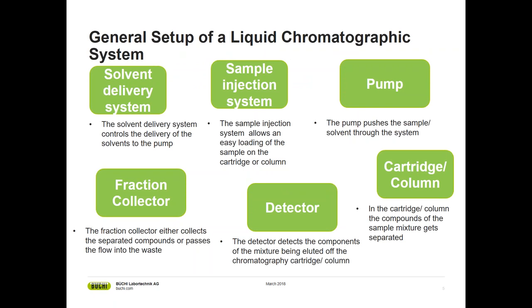What is the general setup of a liquid chromatographic system? First, there is a solvent delivery system, which controls the delivery of solvents to the pump. There is a sample injection system, which allows loading of the sample onto the cartridge or column. Then there is a pump, which pushes the solvents and sample through the whole system including the cartridge — and this is where the separation happens. The next step is detection of the components coming from the cartridge, and finally, in the fraction collector, the compounds are either collected into glass tubes or passed into the waste.